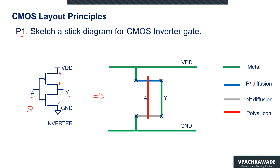All the layers that are used are marked here in different colors. For example, we have a layer for metal, P-plus diffusion, N-plus diffusion, and polysilicon. P-plus and N-plus diffusion are the active areas for the transistors. Here is the active area for the PMOS transistor, and here is the active area for the NMOS transistors — that is the source and drain of the NMOS, and that's the source and drain of the PMOS.